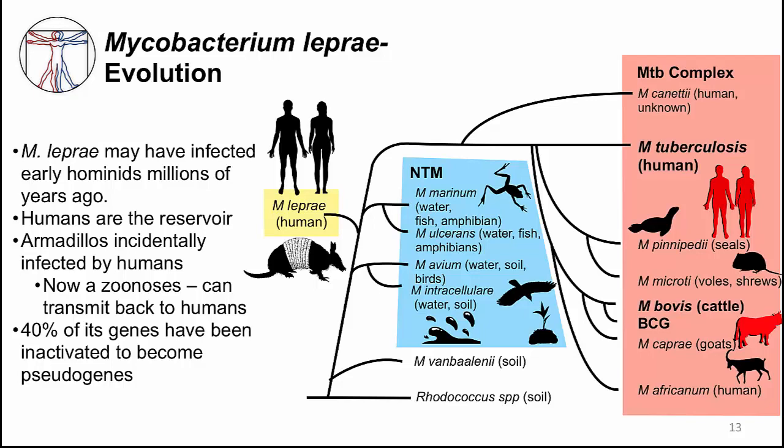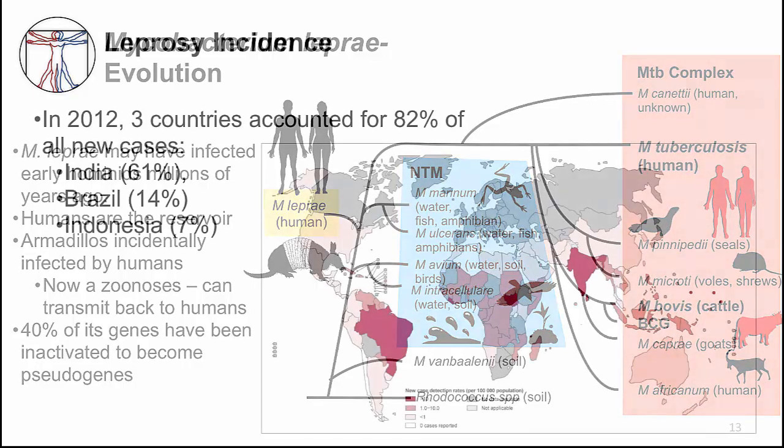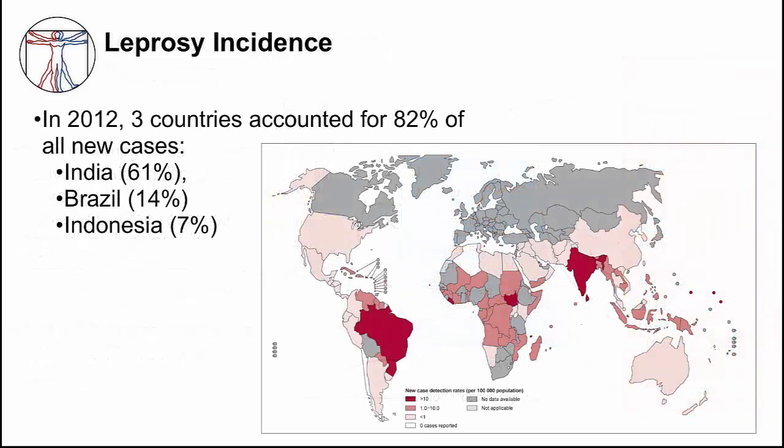Leprosy is becoming more uncommon worldwide. Most of the cases are concentrated in three countries: India, Brazil, and Indonesia.